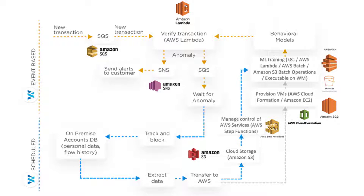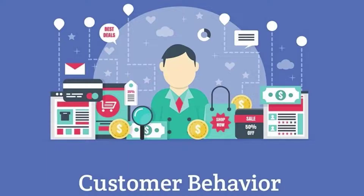Since the machine learning processes require very high frequency transfer of information, it is possible to manage the control of AWS services using AWS Step Functions, which allows you to schedule AWS services such as AWS Lambda or AWS Batch at the granularity of seconds.